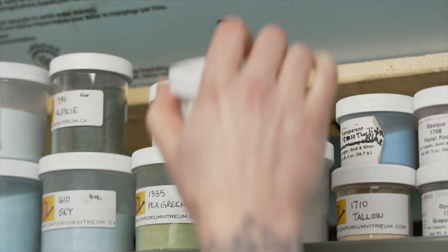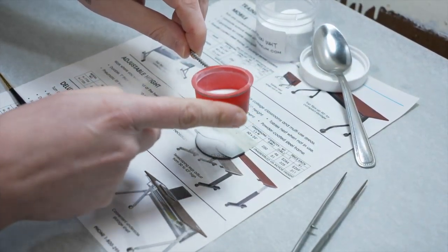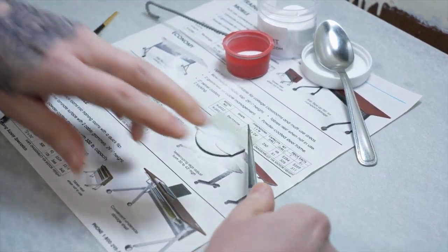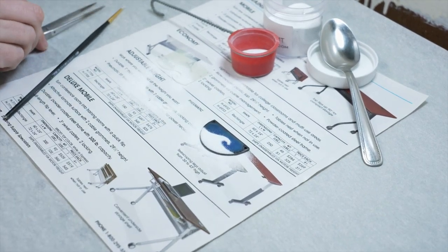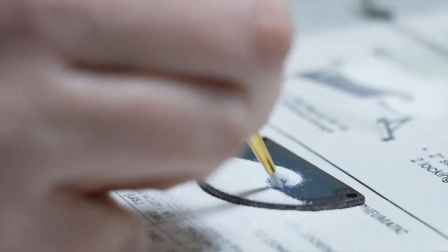Creating the design details is next. A stencil of a wave is placed over the necklace pieces and enamel is carefully sprinkled on top. Using tweezers, the stencil is removed, revealing the design. The remaining blue area is brushed making sure to remove any white powder that could disturb the design.